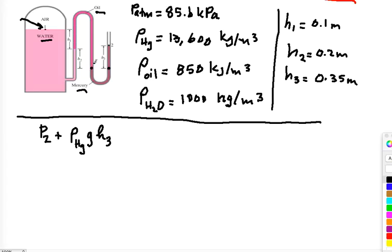So now we need to work out what is the pressure at this point, which is basically the difference in height between here and here, which is h2. So now we are going up the tube, so I'm going to subtract the density of oil times g times h2.